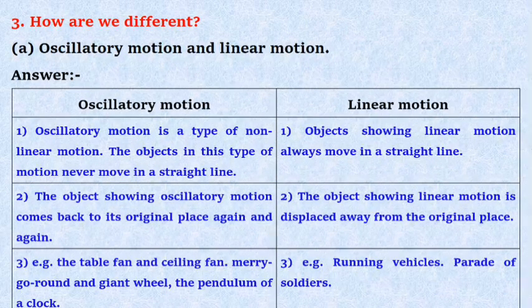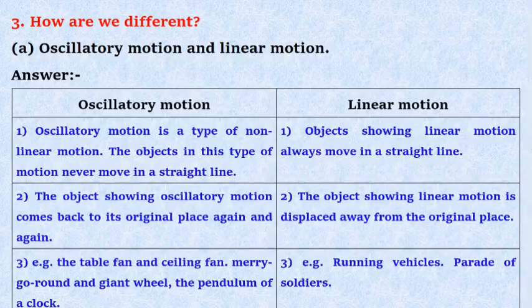Example: In oscillatory motion, the table fan and ceiling fan, merry-go-round and giant wheel, the pendulum of a clock. In linear motion, examples are running vehicles and parade of soldiers.